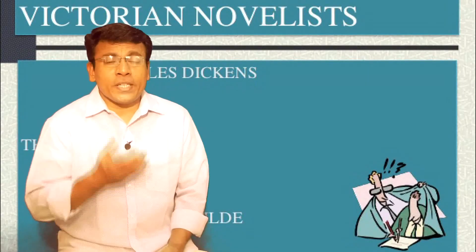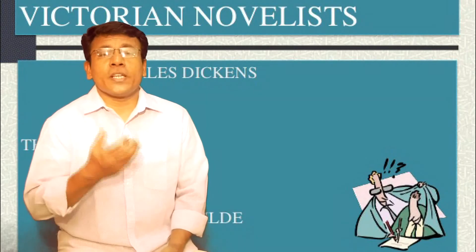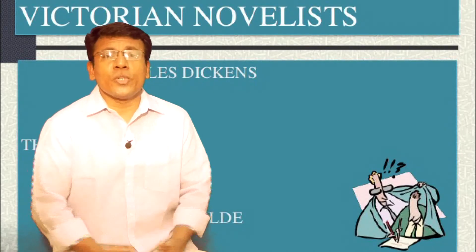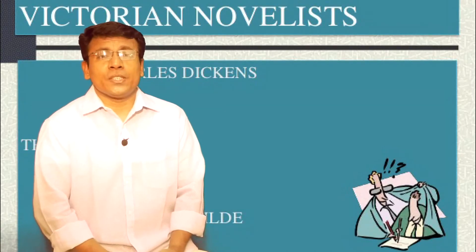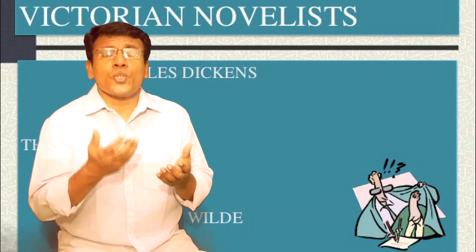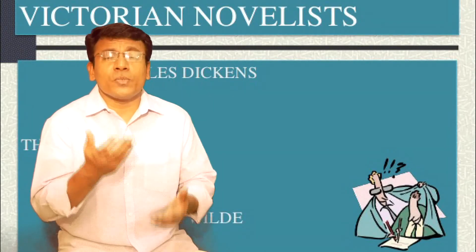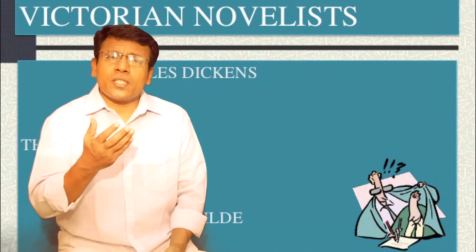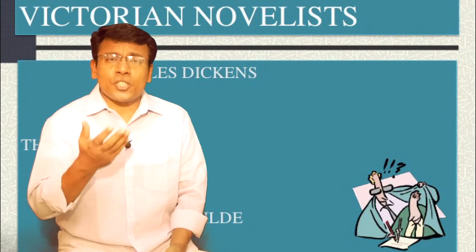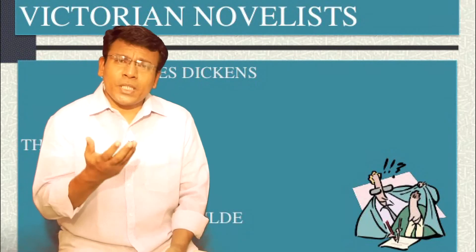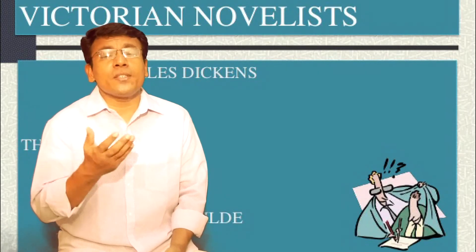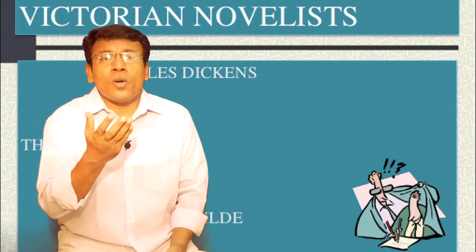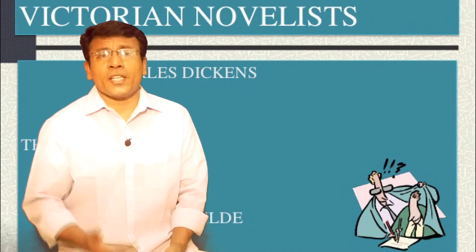Welcome dear students to yet another lecture on the history of English language and literature. We are discussing the first unit, the first module of our syllabus. So far we have discussed the socio-political situation of the Victorian era — a general introduction, the Reform Acts of 1832, 1867, and 1884, and the social changes brought about in England due to these reformation acts.